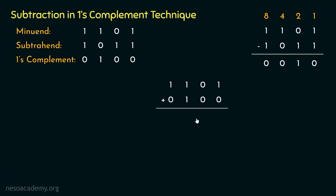Now we perform addition instead of subtraction. We take the minuend 1101 and add it with the one's complement 0100. This allows us to use the same adder circuit for subtraction. Performing the addition: 1+0 = 1, 0+0 = 0, 1+1 = 0 with carry 1, and 1+0 = 1 with carry producing a 5-bit result. We performed addition of two 4-bit numbers but in reality performed subtraction.